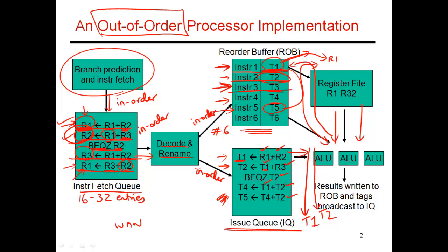Now there are more options. In the next cycle, when the issue queue examines the instructions, it sees that instruction 3 has its operand available and so does instruction 4. Both of them can leave the issue queue in the same cycle. Since you have multiple ALUs, they can both execute together and both produce a result. The branch is not really going to update the reorder buffer, but it will confirm whether the branch prediction was correct — in which case you proceed.